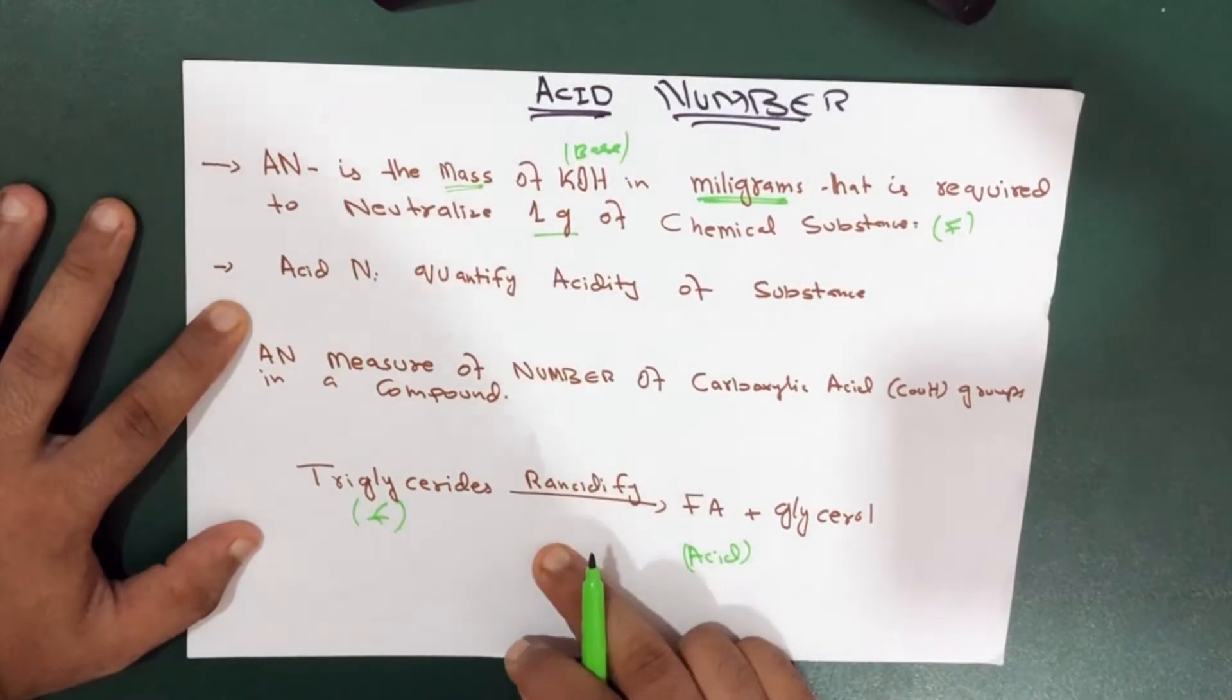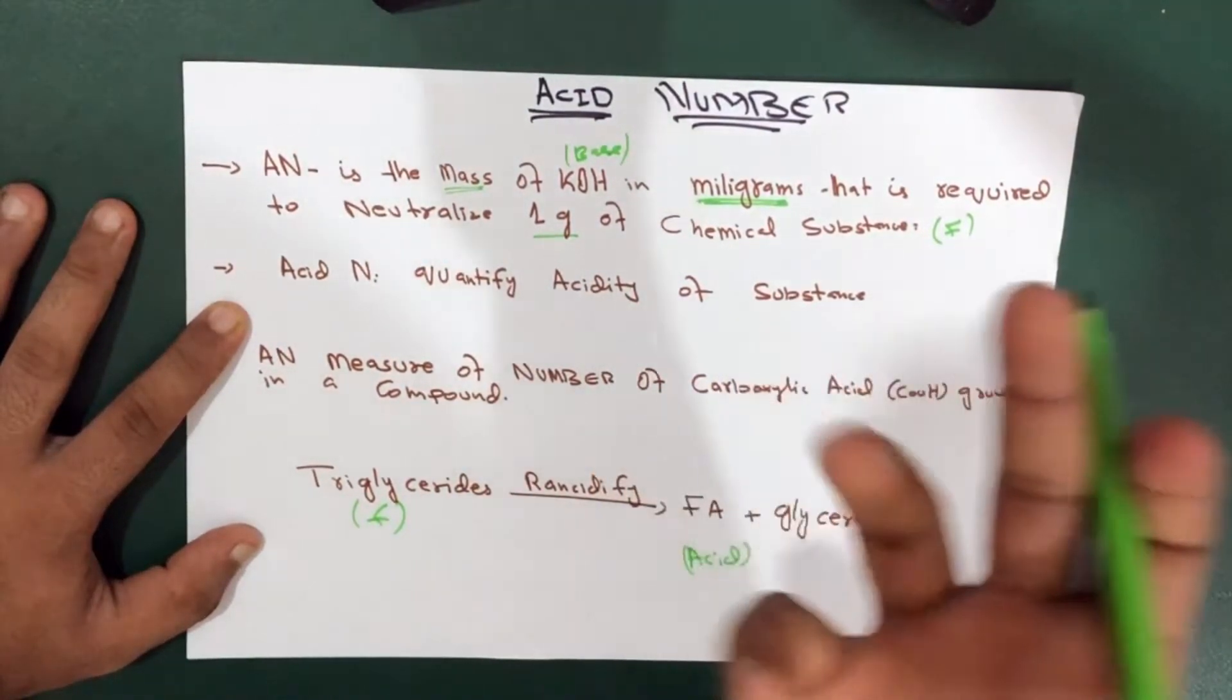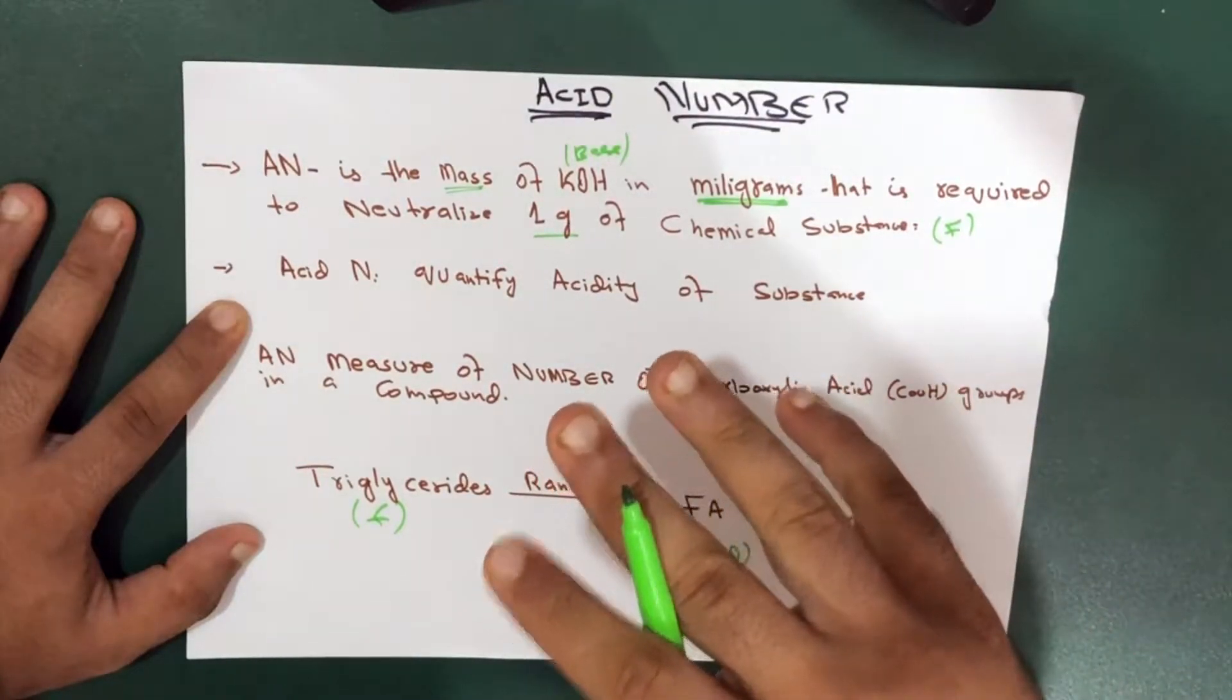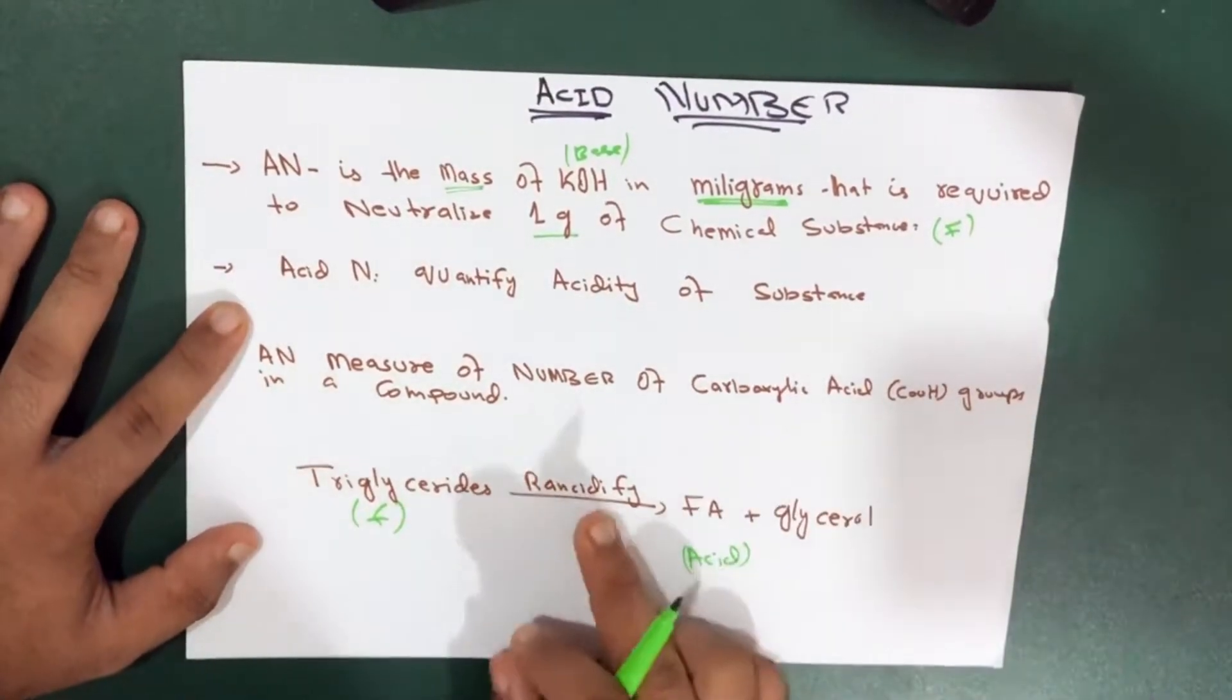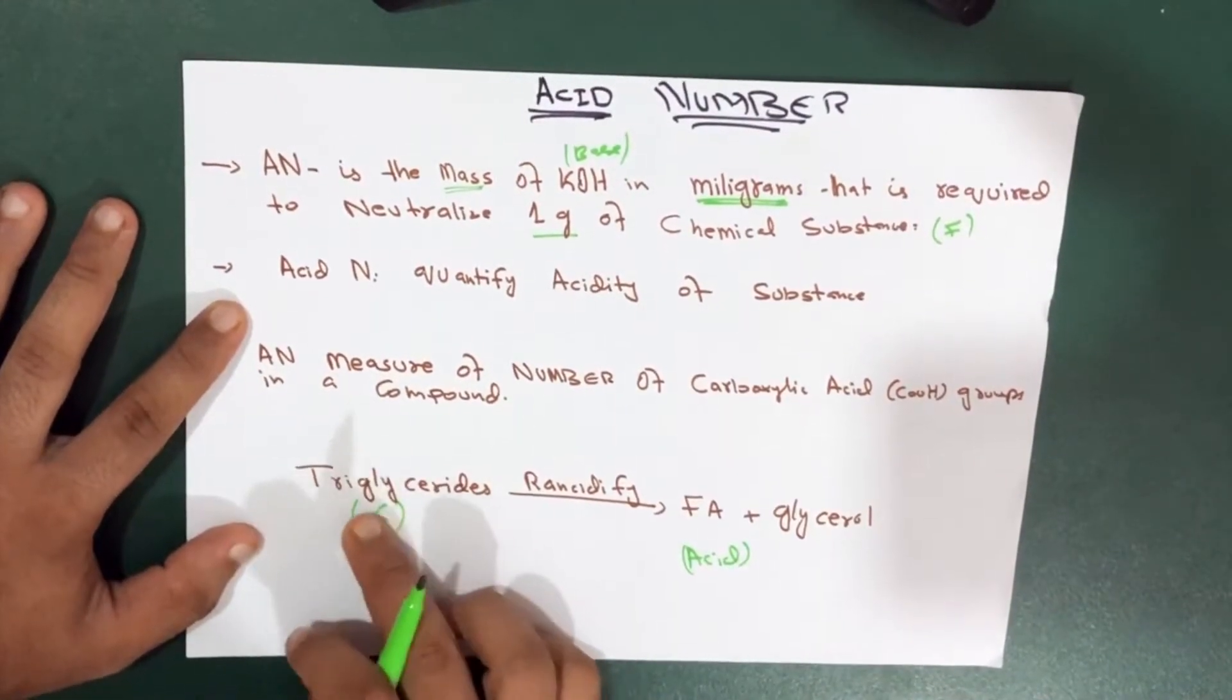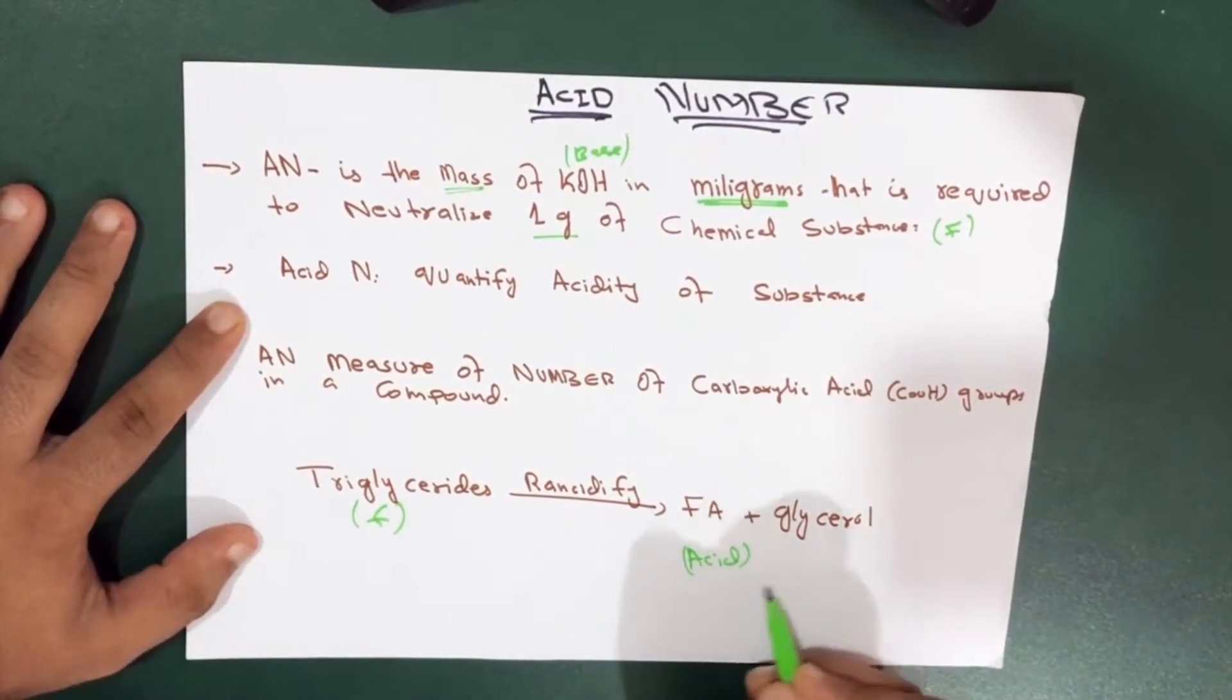So what is rancidification? It is an incomplete or complete oxidation or hydrolysis of the fats or oils which actually result in unpleasant taste or odor. So for example, this is fat. We convert it into fatty acid and glycerol. It's an alcohol, and this is acid.